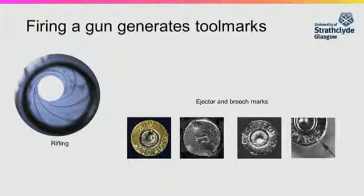Apart from shotguns, which have a smooth barrel, firearms have rifled barrels. This is a set of spiral grooves that run from the chamber to the muzzle in order to grip the projectile and cause it to spin. This increases the range and accuracy of the projectile.